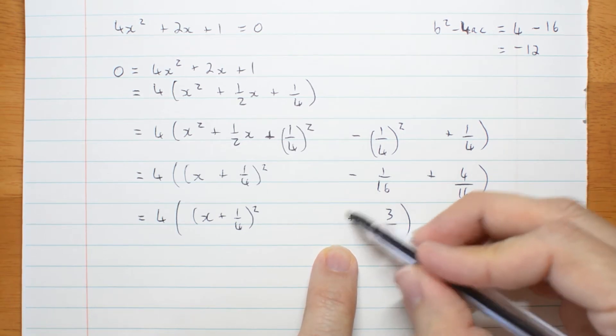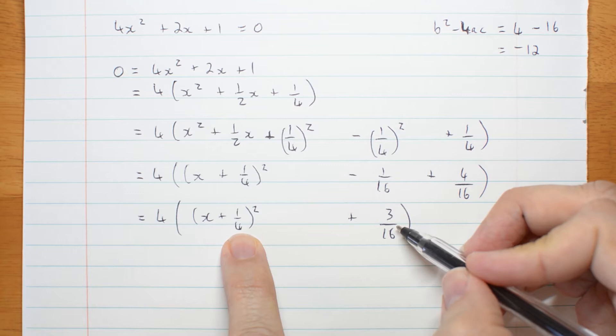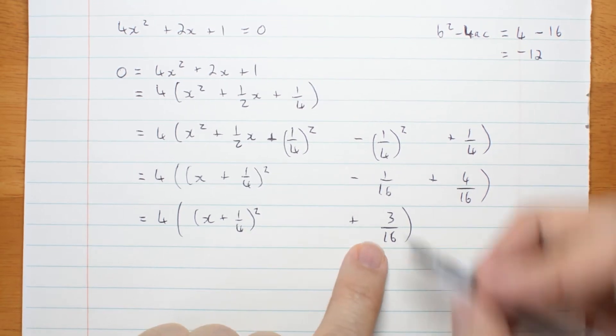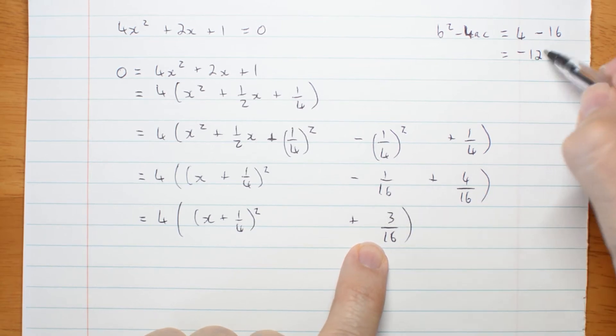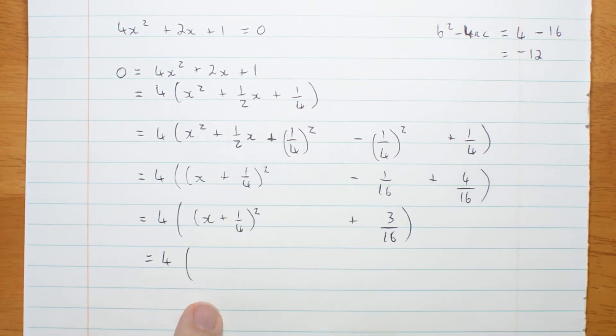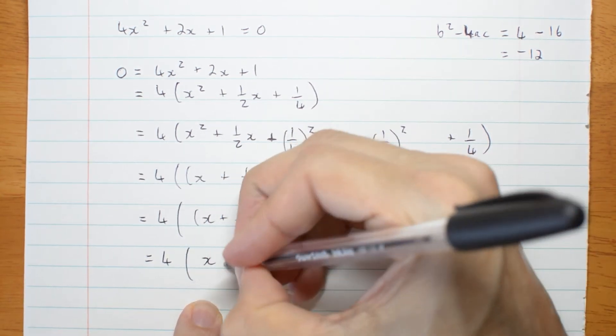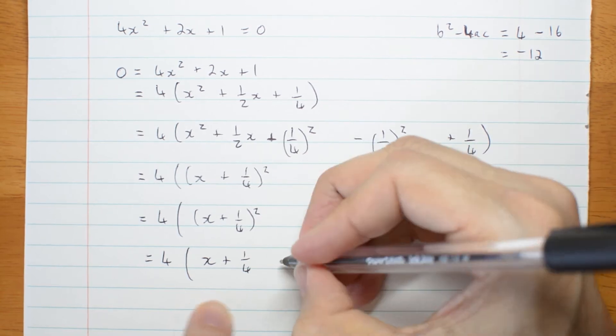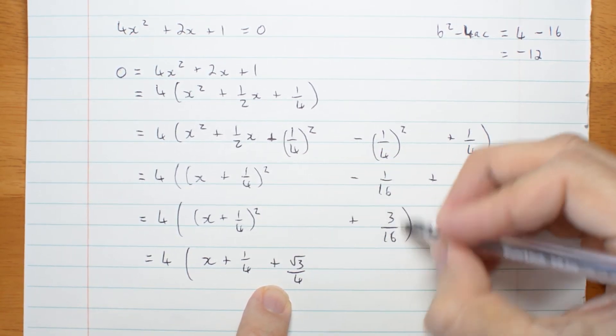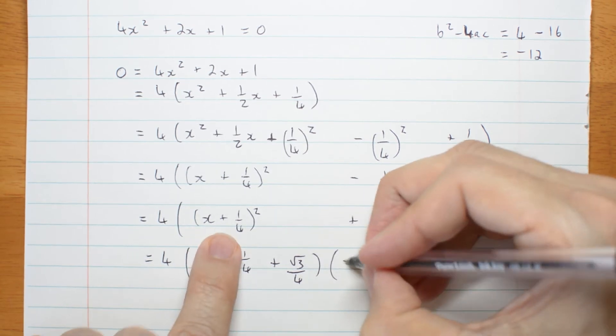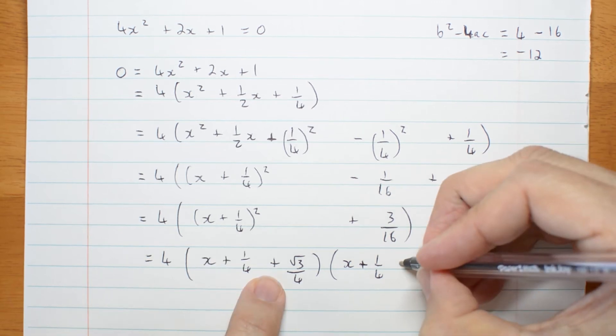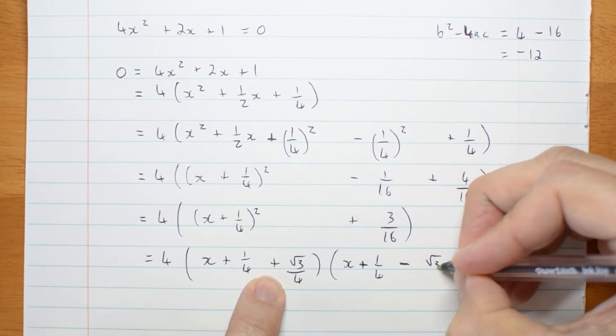Well, it's a sum of squares. So we're going to solve it using complex, which we knew was coming anyway. And it's going to involve a third root 3, which we knew already. 4 times, I'm going to skip some of the brackets. x plus a quarter plus root 3 on 4, that's the square root of this, times x. This sign doesn't change. x plus a quarter. This sign does. Minus root 3 on 4.